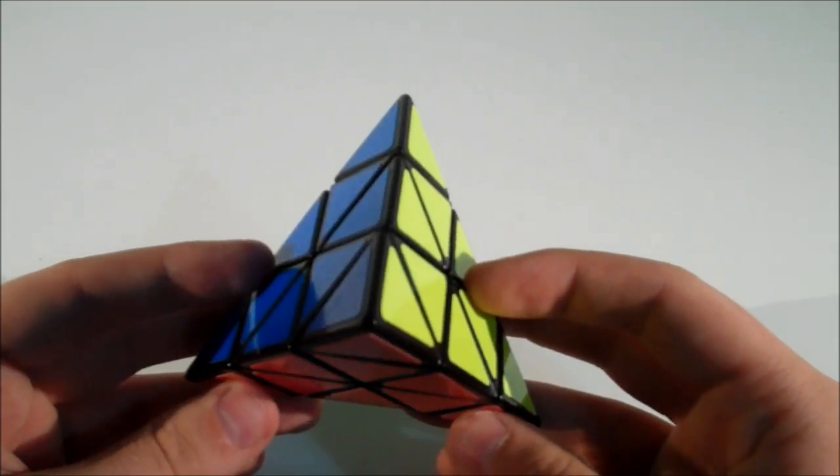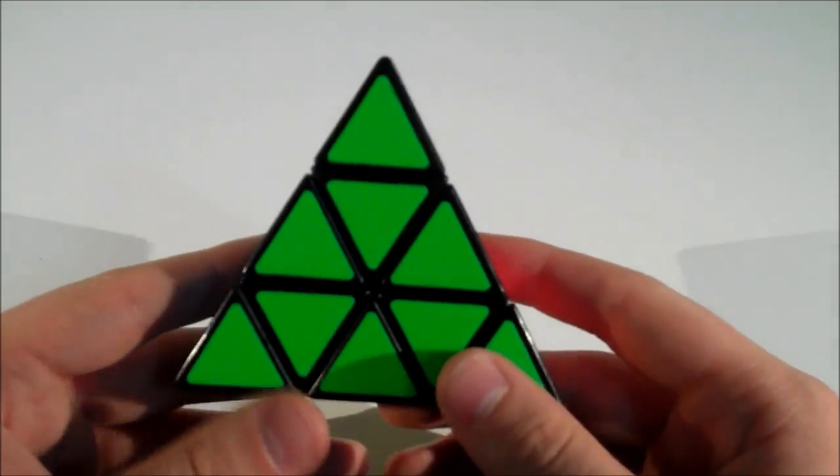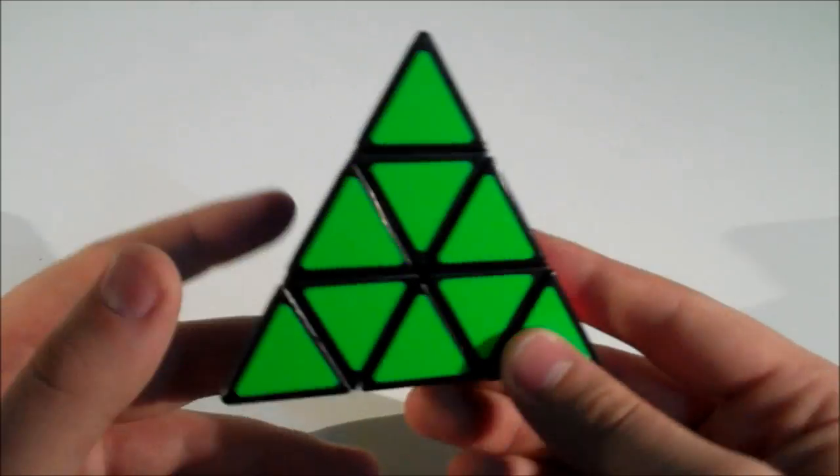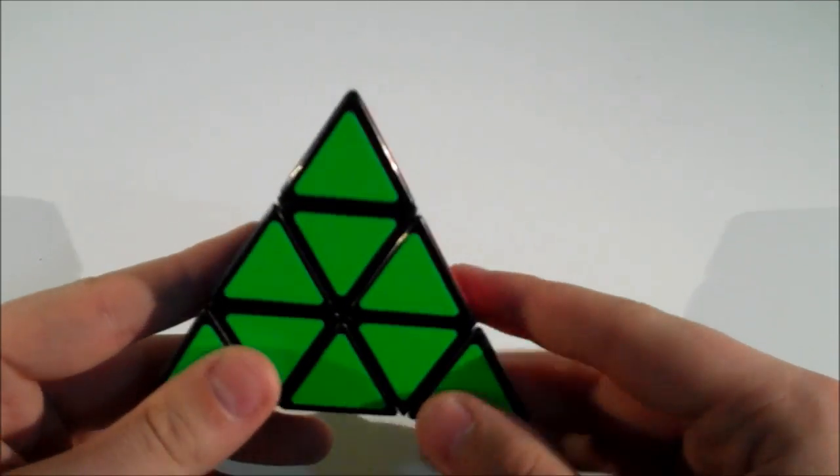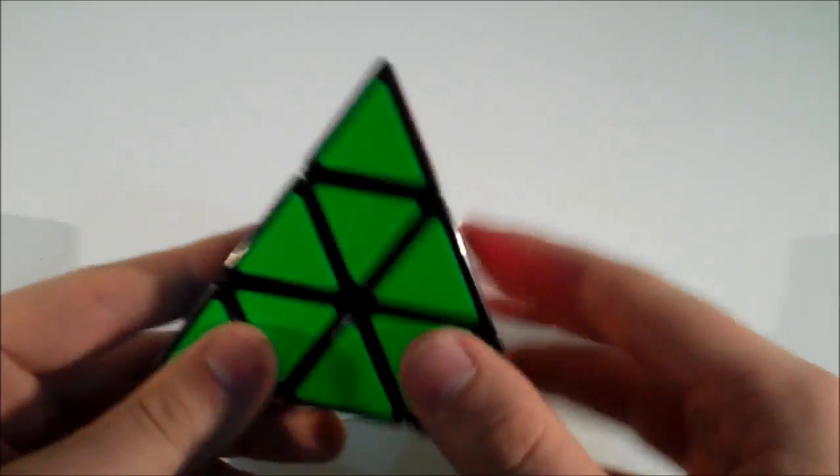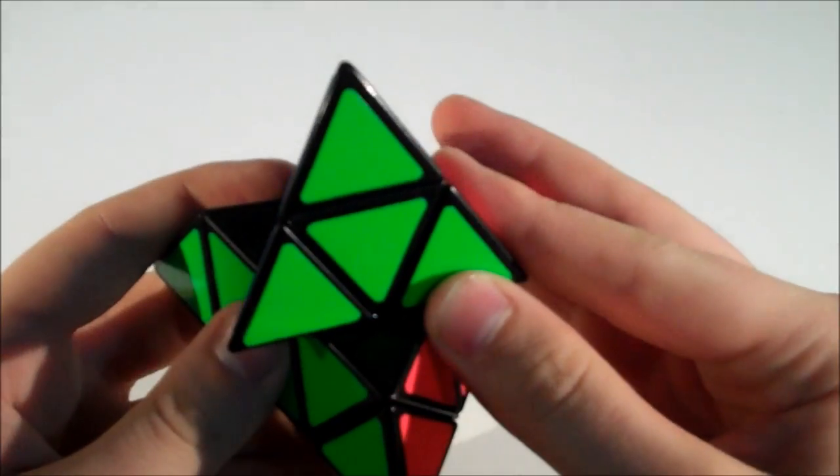So on to the turning. This puzzle is really nice. I haven't done anything to it since I unboxed it, and it just turns amazing. As you can see, there are ball bearings in the edges—that little shiny thing there—and that helps the puzzle to click. So when I make a turn, it clicks.